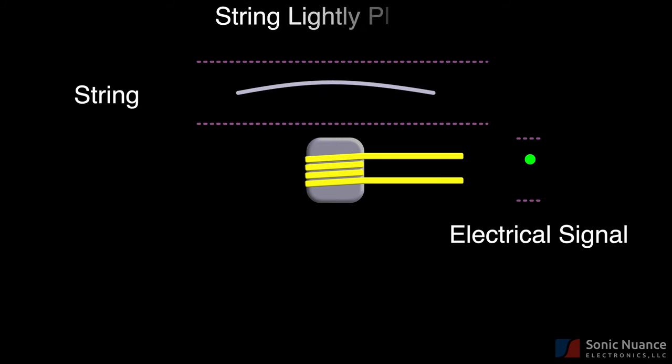In this animation, as the string moves after being plucked lightly, the electrical signal moves proportionally. Dashed lines represent maximum and minimum of string and electrical signal amplitudes.